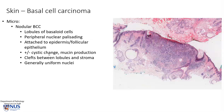There may be sometimes cystic change and mucin production, which we also saw. And we may see clefts between the lobules and stroma — again, we saw this earlier. Generally, the nuclei are relatively uniform.